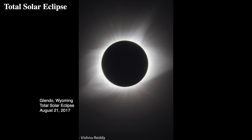A total solar eclipse is when the disc of the sun is completely blocked by the moon. It is interesting that the moon's size is exactly the same as the sun's apparent size in the sky — we'll get to why that is later.